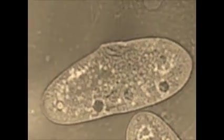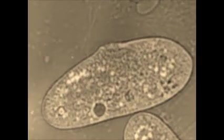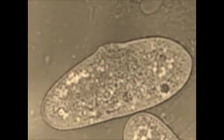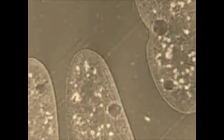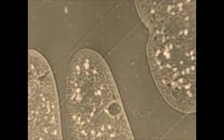Cilia are arranged in rows and they lash through the water like tiny oars. When observed under the microscope, this unicellular organism can be seen moving rapidly as you see in this video.